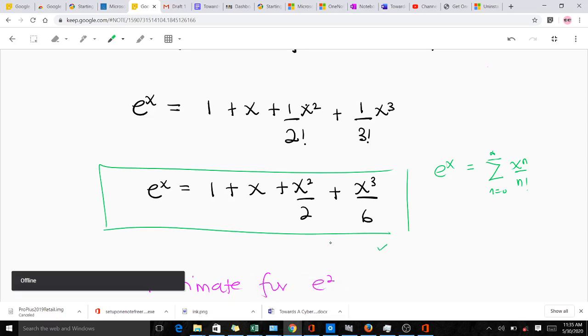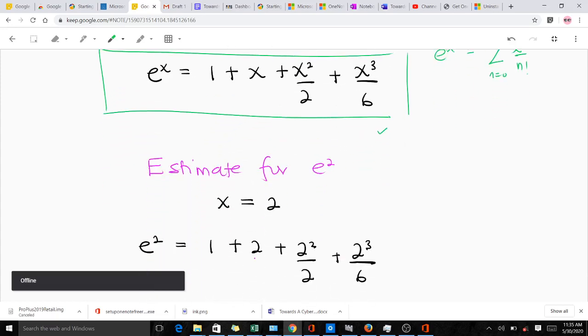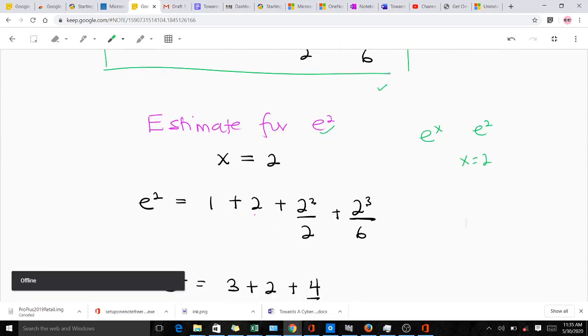The second part of the question says you are supposed to use this expansion here to estimate e^2. You realize that making comparison, our x is equal to 2. So that means in our estimation, wherever we find x, we are going to put 2 there.